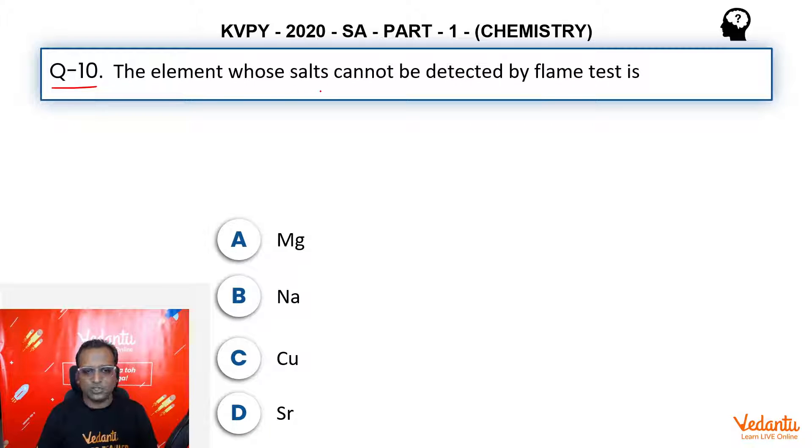Now, the element whose salts cannot be detected by flame test is? So this question is primarily based on the colors of flame test. If you know which element gives which color, you definitely remember which element does not participate in flame test.